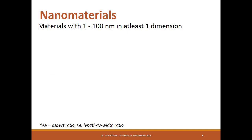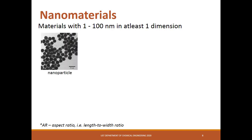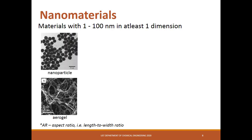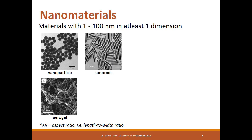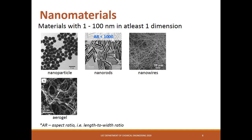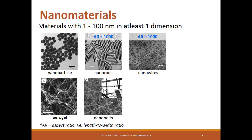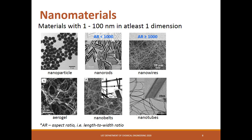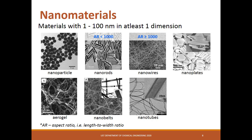Examples of nanomaterials are nanoparticles, which are spherical in shape; aerogel, which is an ultralight material with extremely low density and extremely low thermal conductivity; nanorods, with aspect ratio less than one thousand but normally three to five; nanowires, with aspect ratio greater than one thousand; nanobelts, where the cross section is rectangular; nanotubes, a wire-like morphology that is hollow at the middle; nanoplates; and nanosheets.